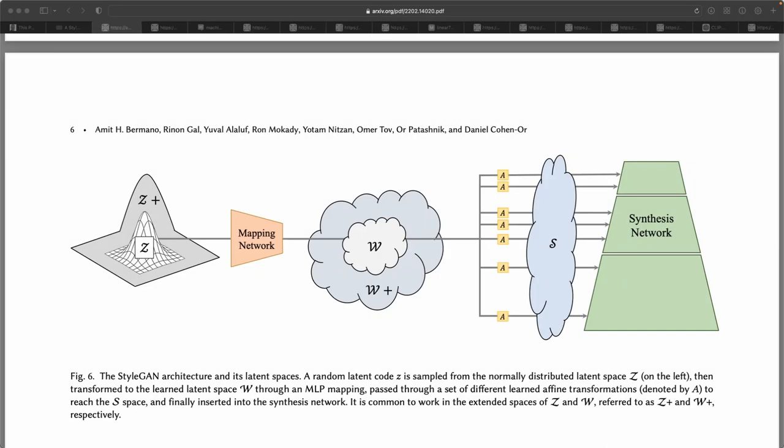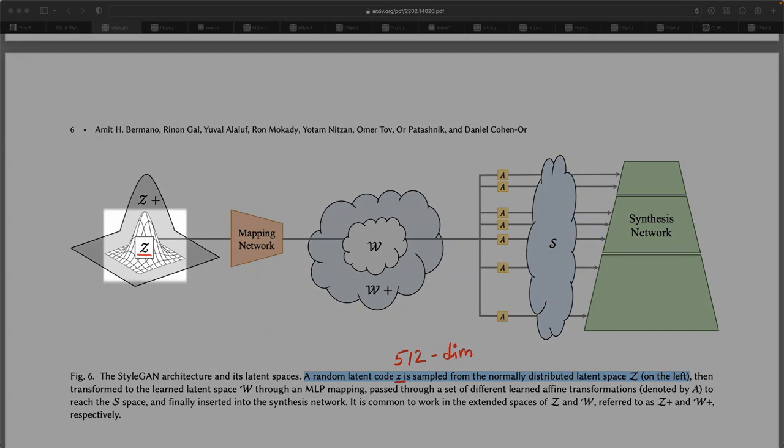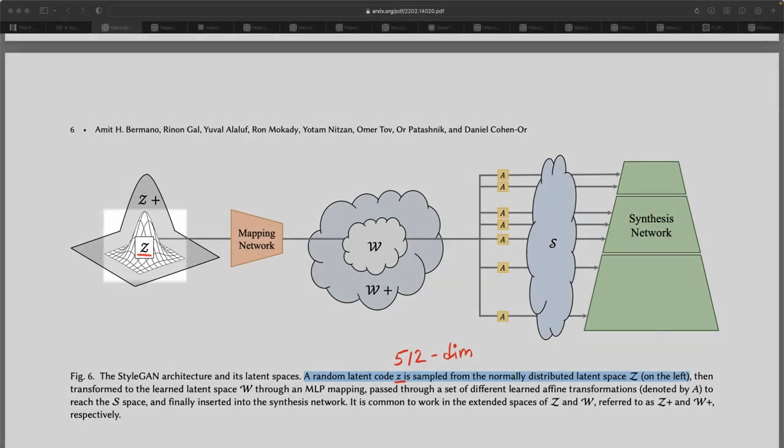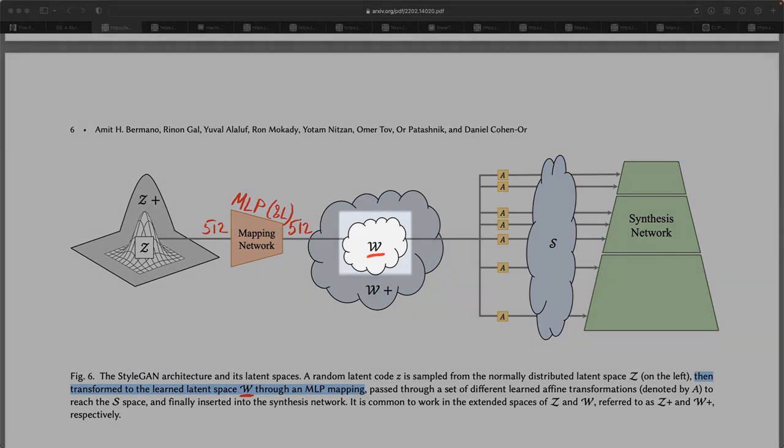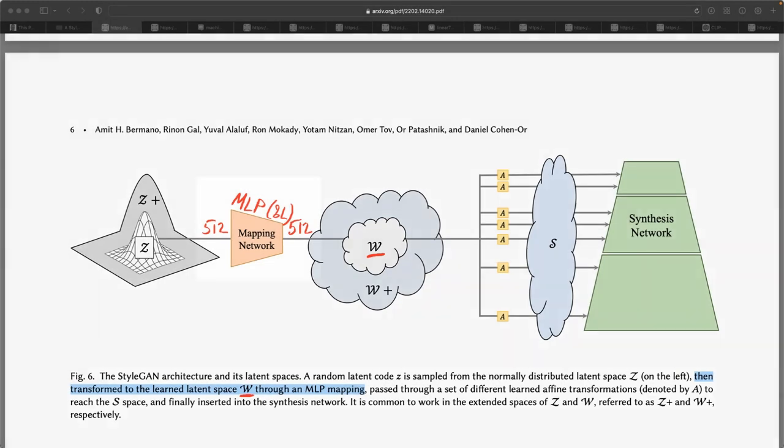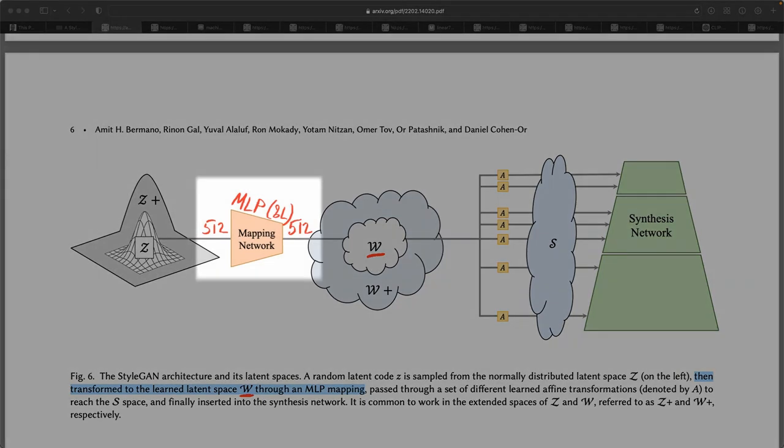First, let's discuss this StyleGAN dataflow pipeline and its latent spaces. While training, a random 512-dimensional vector is sampled from the normally distributed latent space Z. Then, it's been transformed into a new point in 512-dimensional space called W through a multi-layer perceptron of 8 layers.